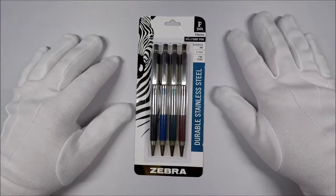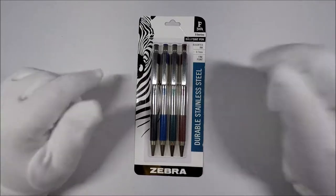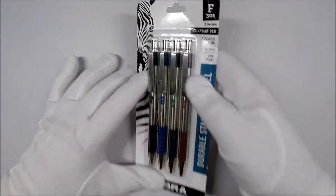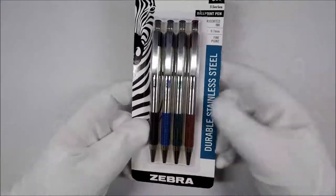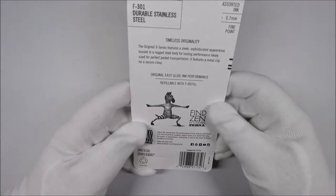Hello and welcome to White Glove Reviews. In this video, we're going to take a look at the Zebra F301 Ballpoint Pens. These pens come in packs of four. This pack was under $10 on Amazon. I'll include a link in the description below.